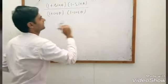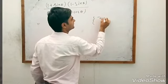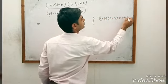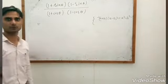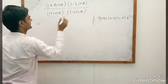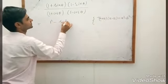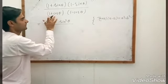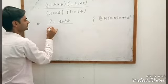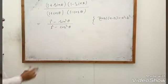Now see: (1 + sin θ)(1 − sin θ). We have an identity that (A + B)(A − B) = A² − B². We can use it here — this gives 1² − sin²θ upon (1 + cos θ)(1 − cos θ), which equals 1² − cos²θ.